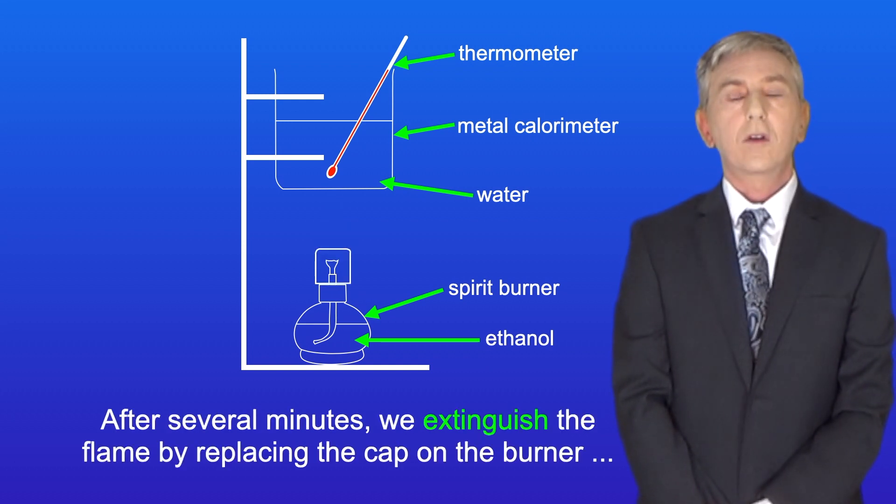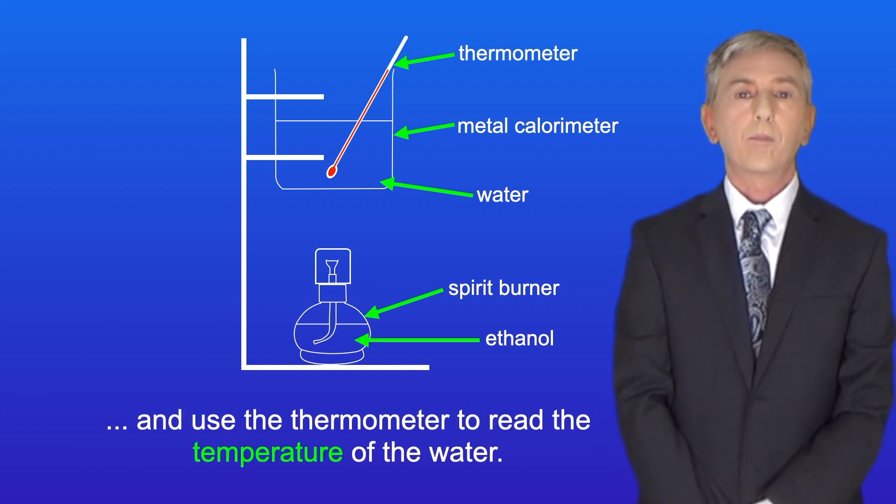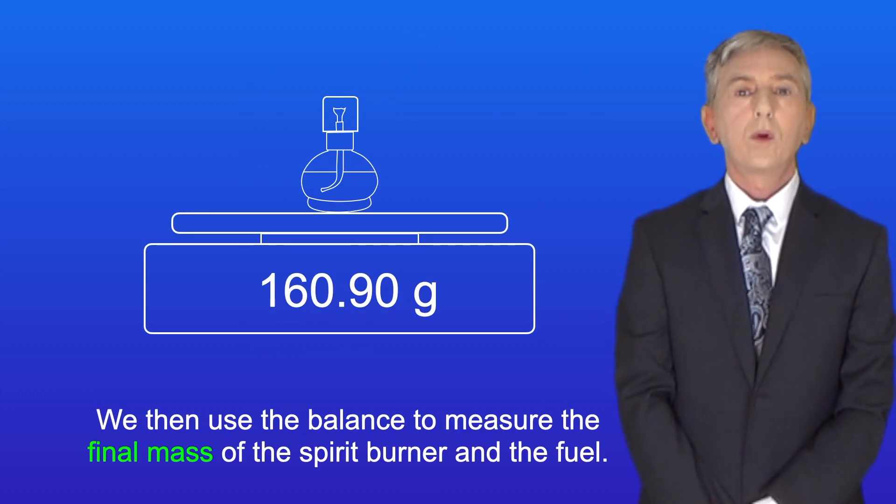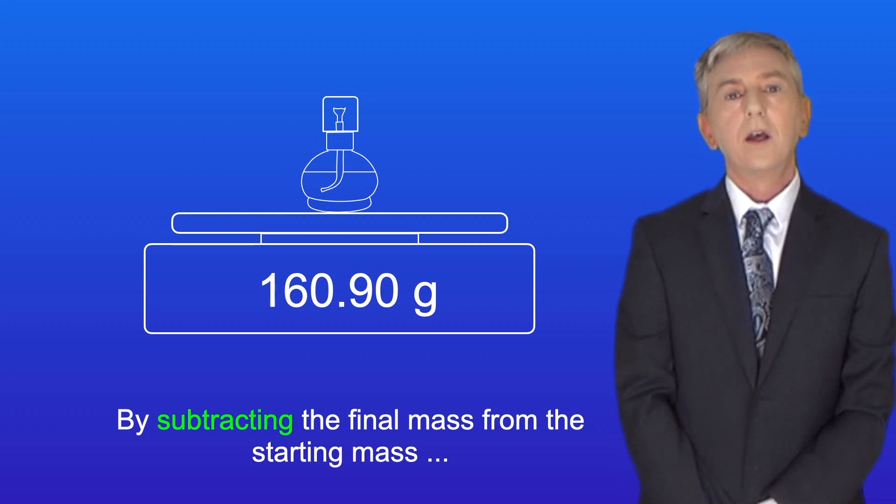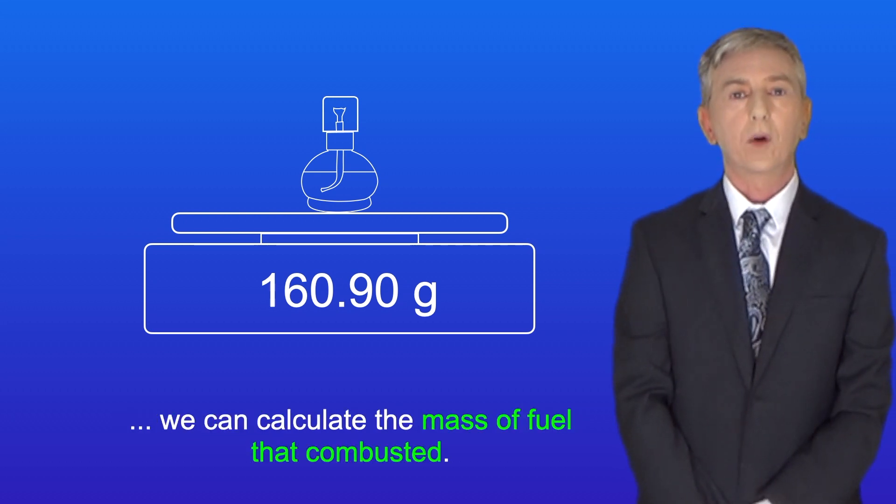After several minutes we extinguish the flame by replacing the cap on the burner and use a thermometer to read the temperature of the water. We then use the balance to measure the final mass of the spirit burner and the fuel. By subtracting the final mass from the starting mass we can calculate the mass of fuel that combusted.